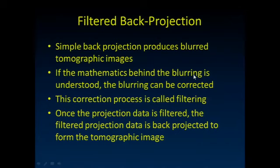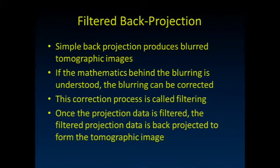So how do we correct for that? Simple back projection basically produces a blurred slice image of the true object. If we can understand the mathematical process behind the blurring, we can correct for it—and that's exactly what filtering does. Filtering is the correction applied so that when you do the back projection, the image turns out looking correct. So: filtered back projection. We filter those projections and then do the same back projection.